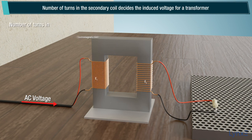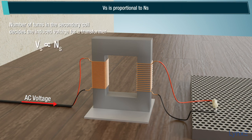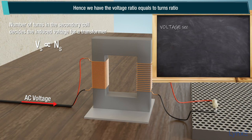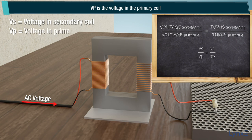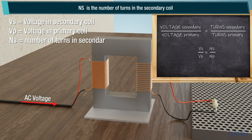Number of turns in the secondary coil decides the induced voltage. For a transformer, Vs is proportional to Ns. Hence, we have the voltage ratio equals to turns ratio, which is given as: Vs over Vp equals Ns over Np. Where Vs is the voltage in the secondary coil, Vp is the voltage in the primary coil, Ns is the number of turns in the secondary coil, and Np is the number of turns in the primary coil.